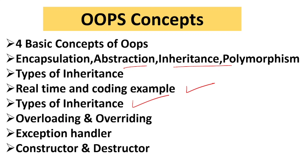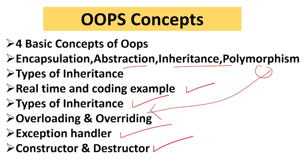Overloading and overriding are examples of polymorphism — overloading is static polymorphism and overriding is dynamic polymorphism. Prepare their definitions and examples. Also prepare exception handling — the exception handler removes errors — and what constructors and destructors are in OOPs.